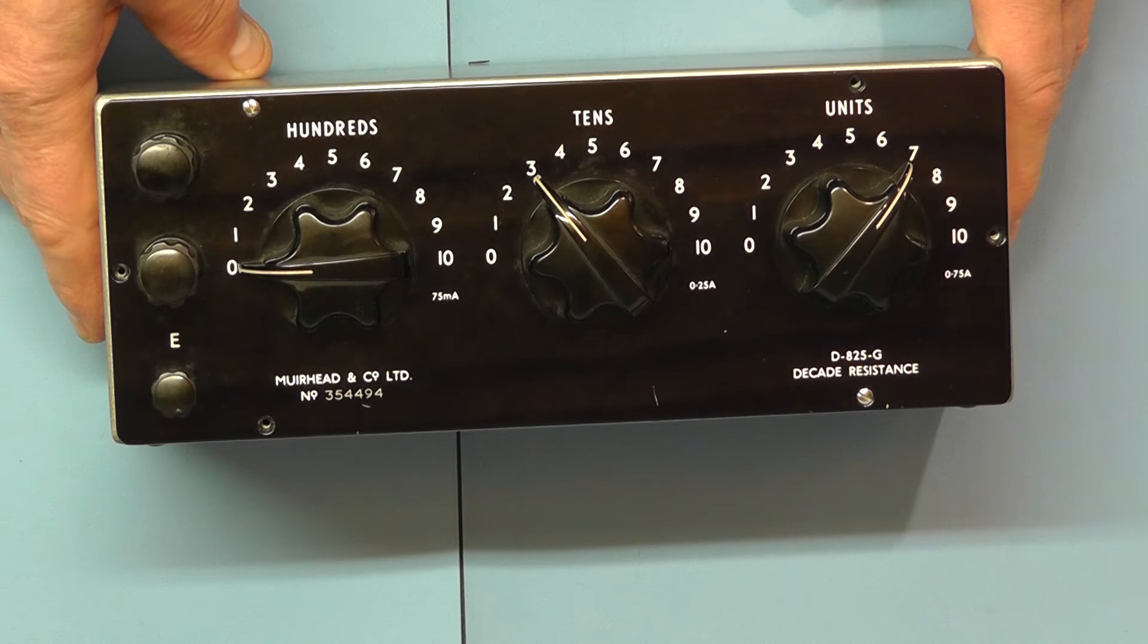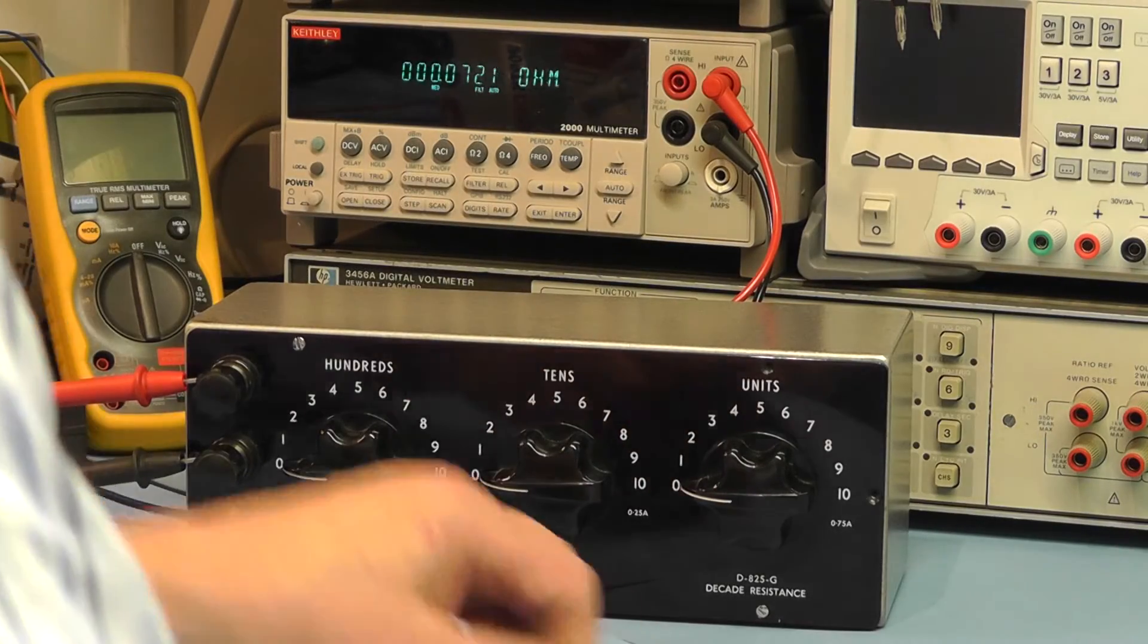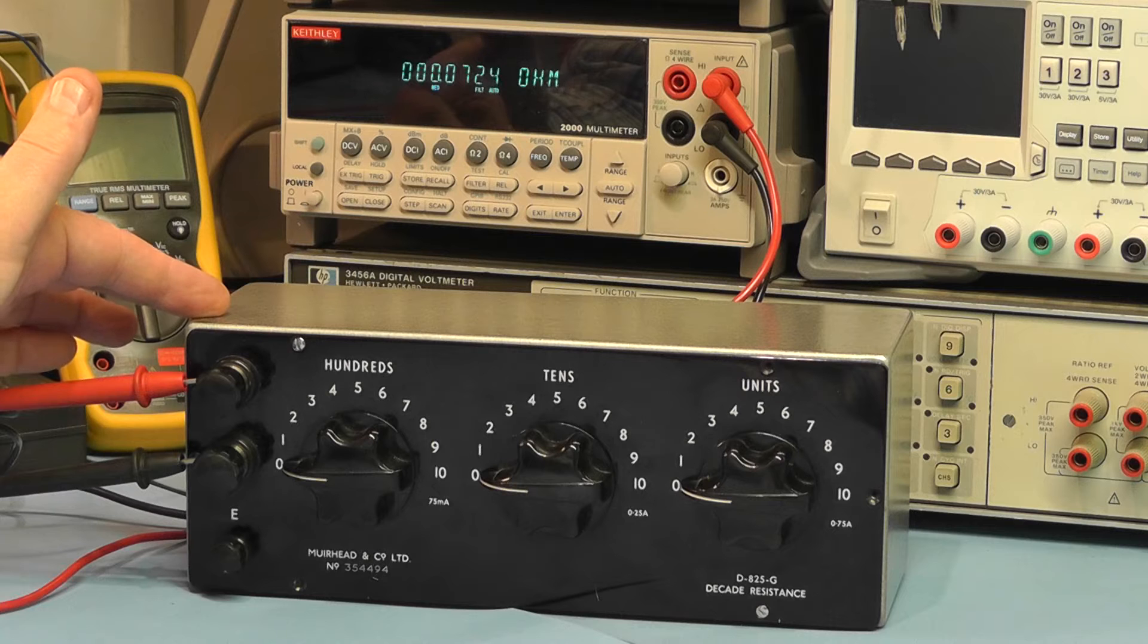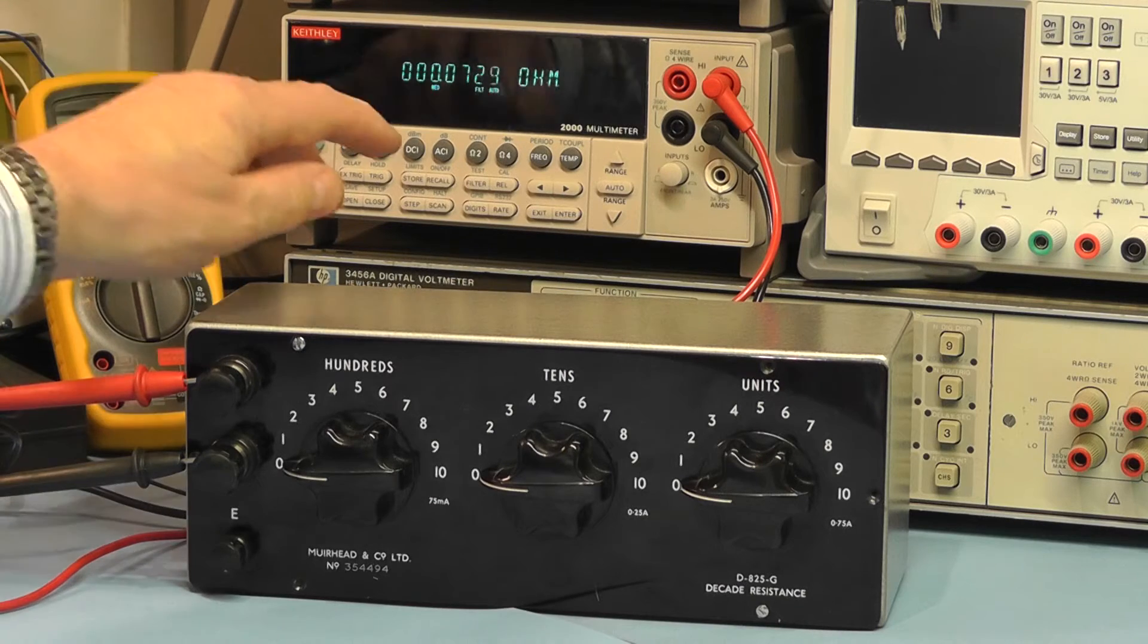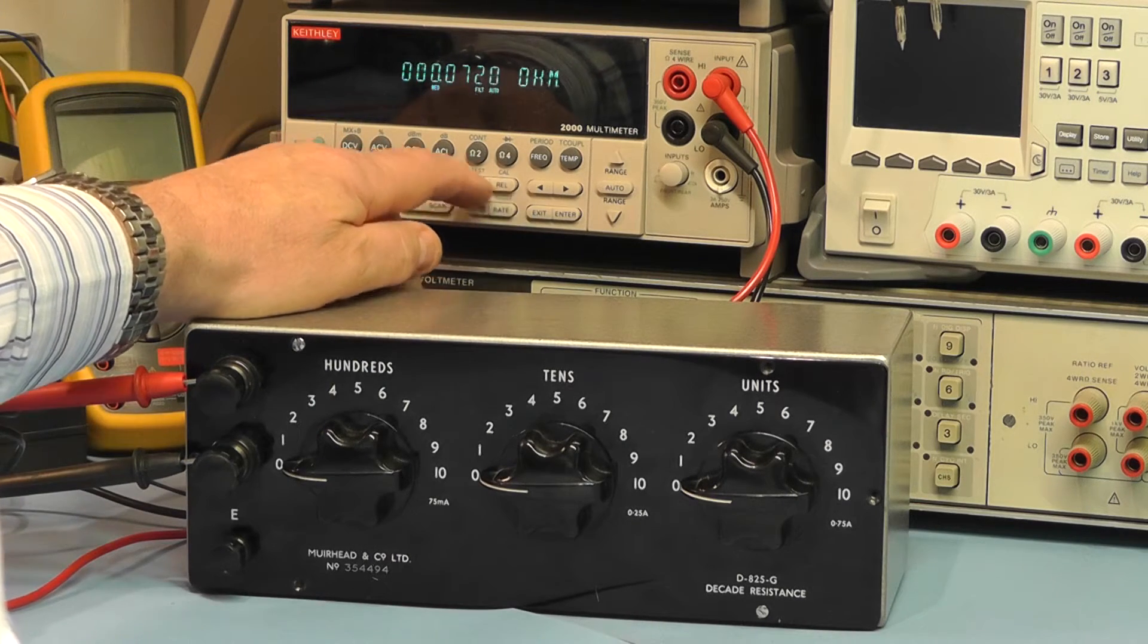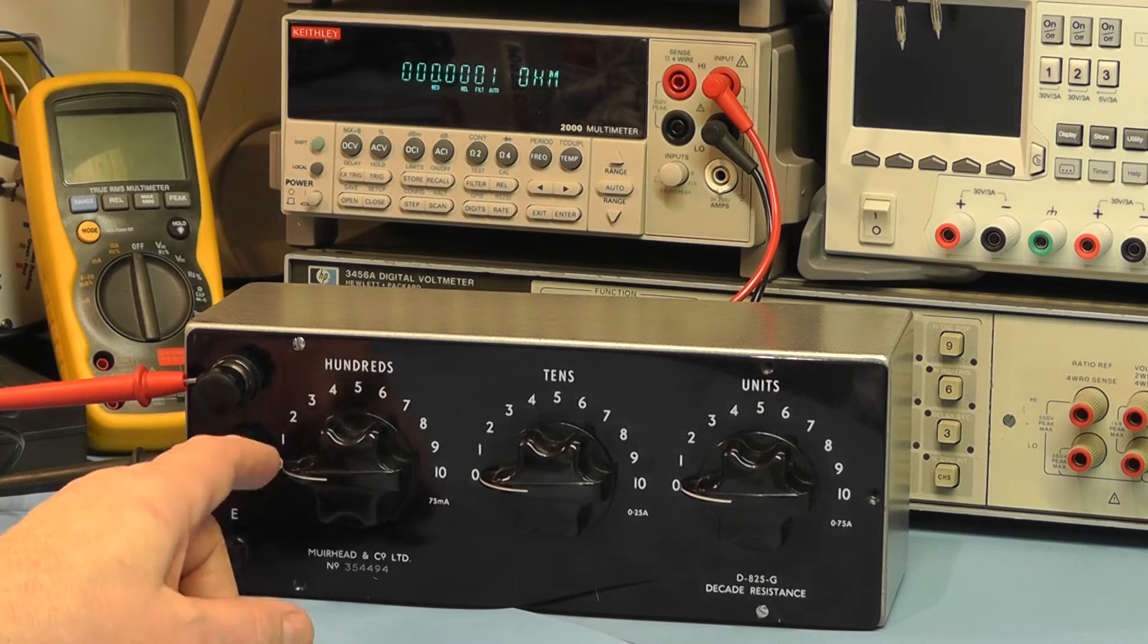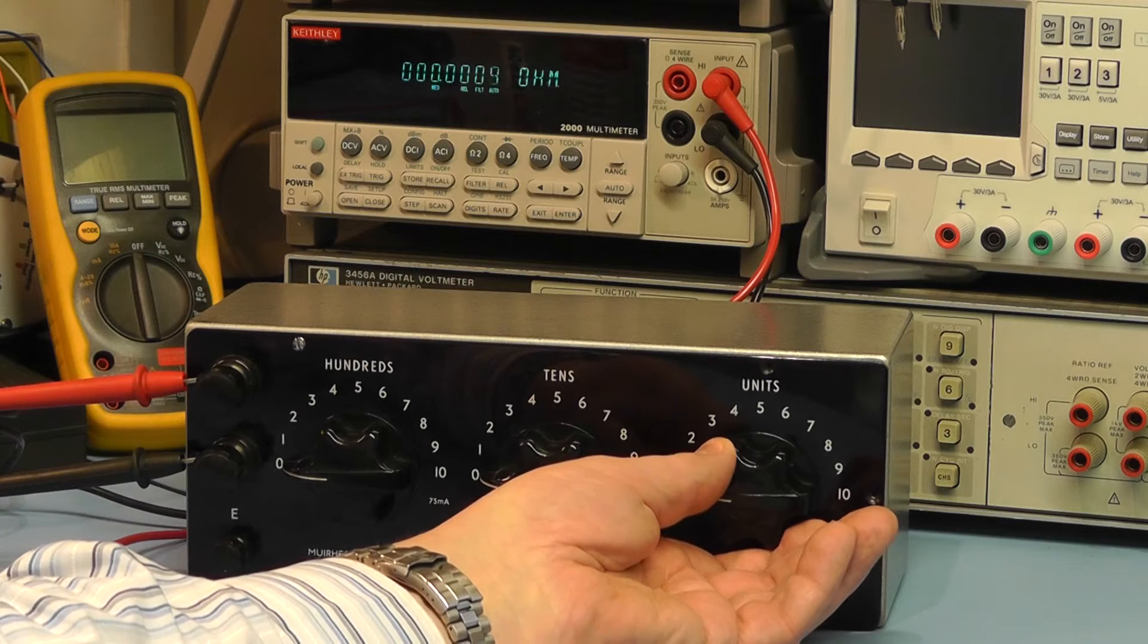We'll give it a test now on the meter and just see how accurate the resistance range is. I have the unit now connected to the Keithley 2000 multimeter and I have it on the ohms range. I'll just filter the resistance of the meter leads out to get my starting zero. There we have it, now all the switches are at zero so we should be reading zero ohms. I'll increase the first one to one ohm.